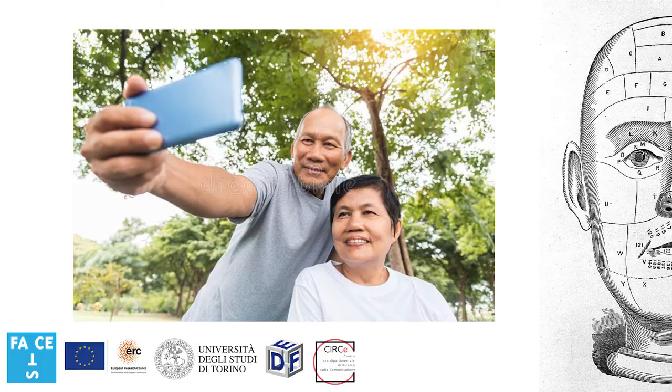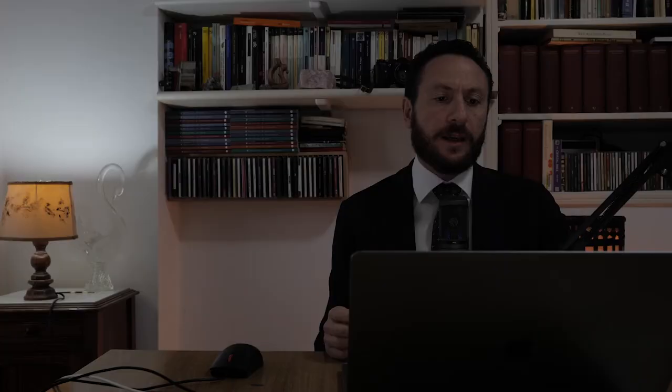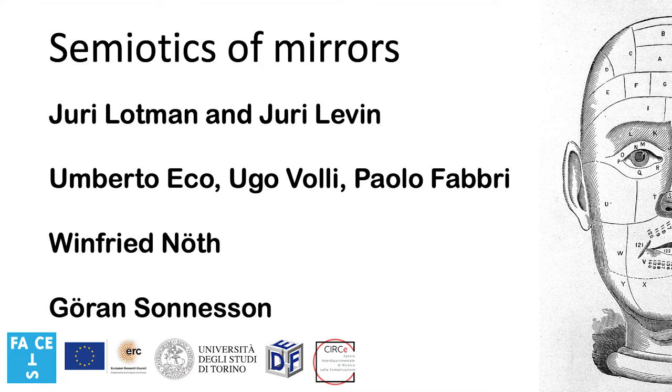In contemporary scholarship, mirrors have also been a concern for semioticists, art historians, as well as physicists. Within semiotics, the works of the Tartu Moscow School, not only Yuri Lotman, but also Yuri Levin and other members of the group. In Italy, Umberto Eco, Ugo Volli and Paolo Fabbri, as well as Winfried Nöth and Göran Sonesson, all made important contributions to the study of this subject.